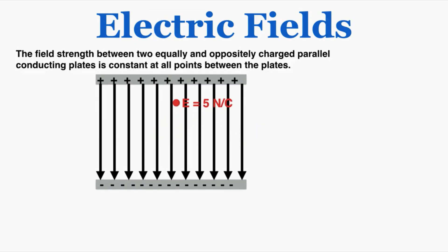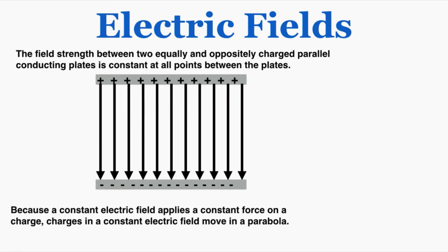Because a constant electric field applies a constant force on a charge, charges in a constant electric field move in a parabola. This field behaves a lot like gravity — it's constant and applies a constant force downward on the charge, just like gravity does. So if a charged particle is launched into that field, its path follows the shape of a parabola. This is another reason electric fields are very similar to gravitational fields, and that's what you need to know about how electric fields work.